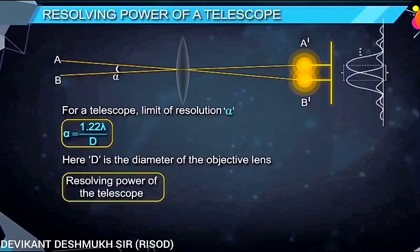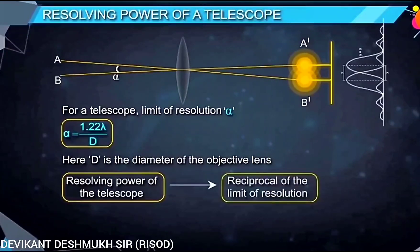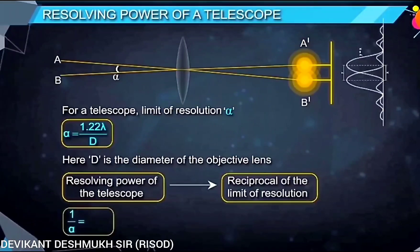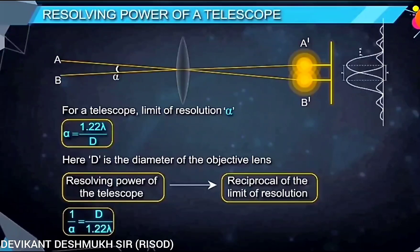We know the resolving power of a telescope is the reciprocal of the limit of resolution. Therefore, the resolving power of the telescope equals 1 by alpha, which equals D upon 1.22 lambda.